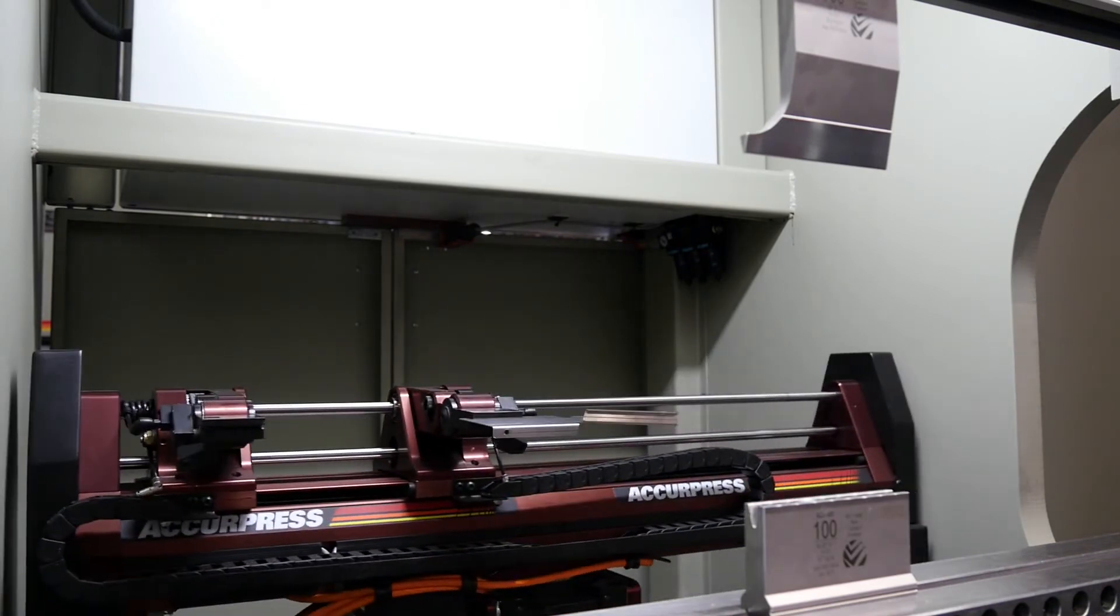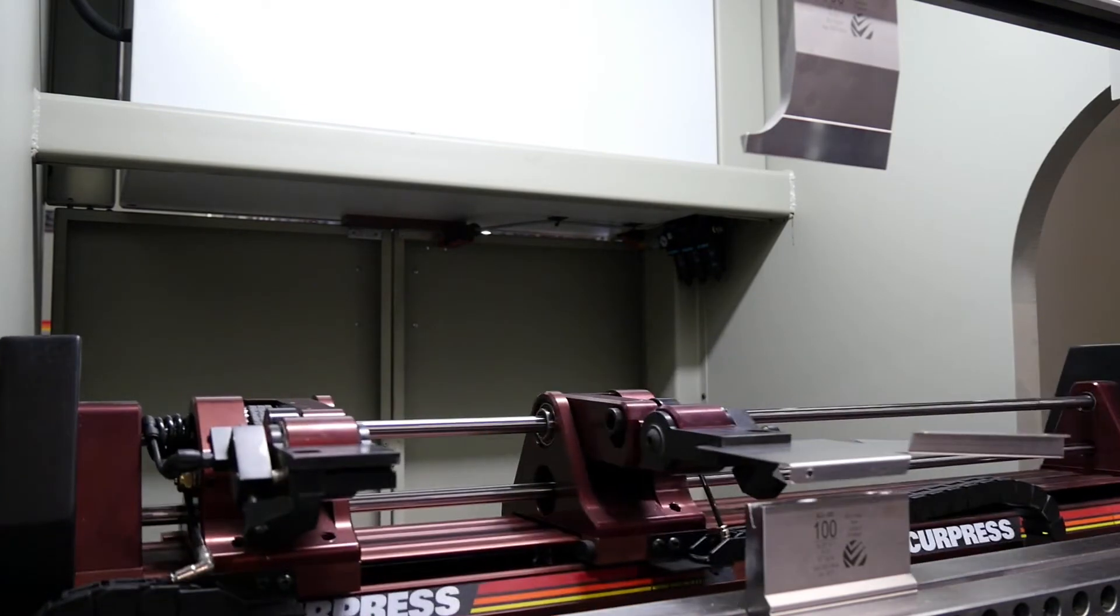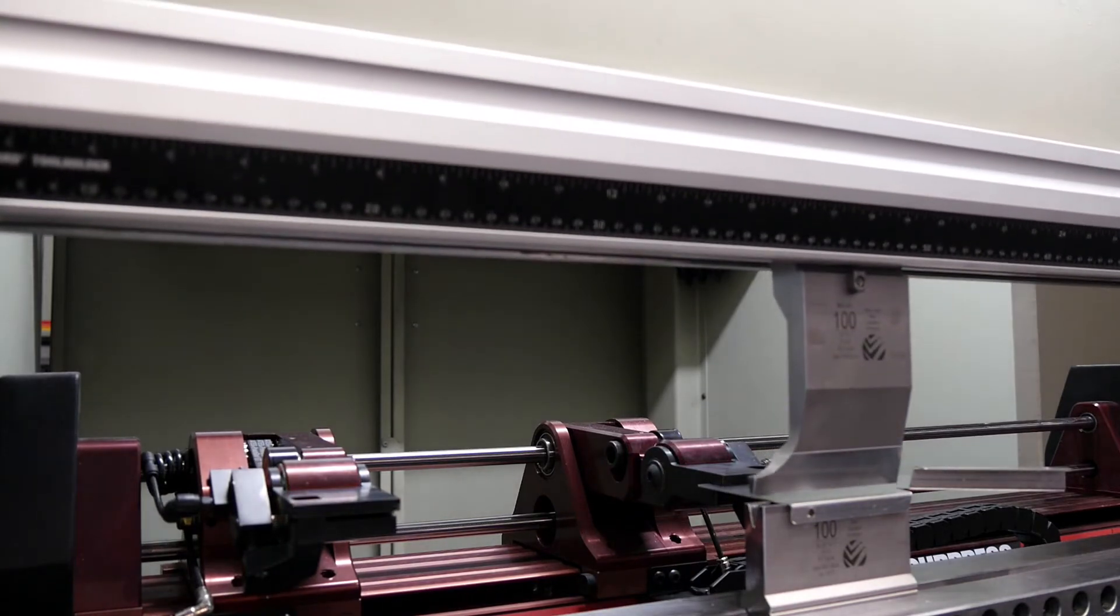Clamping fingers safely hold the part for repositioning and gauging, then release the part and retract out of the way for safe motion during forming.